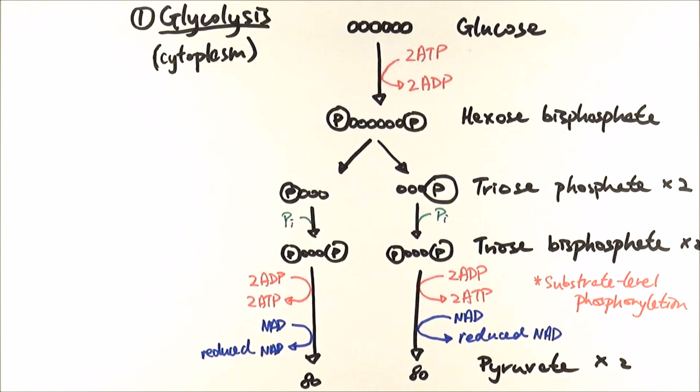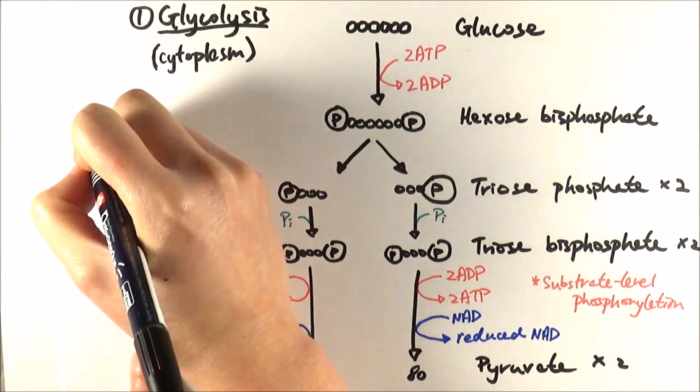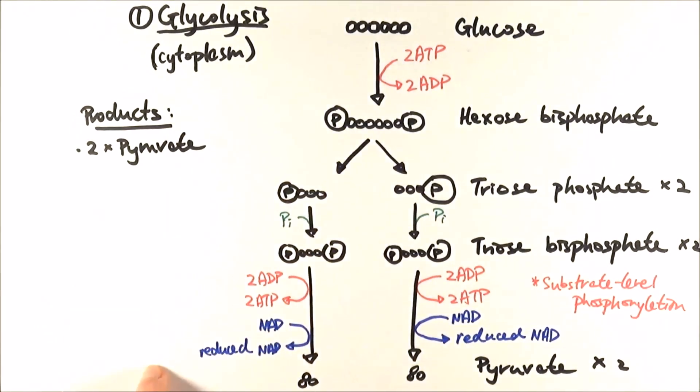As you can see, first of all we do get two pyruvate molecules, and these two pyruvate molecules then go on to enter the mitochondria to continue on with the cycle. It's just an intermediate in that sense.